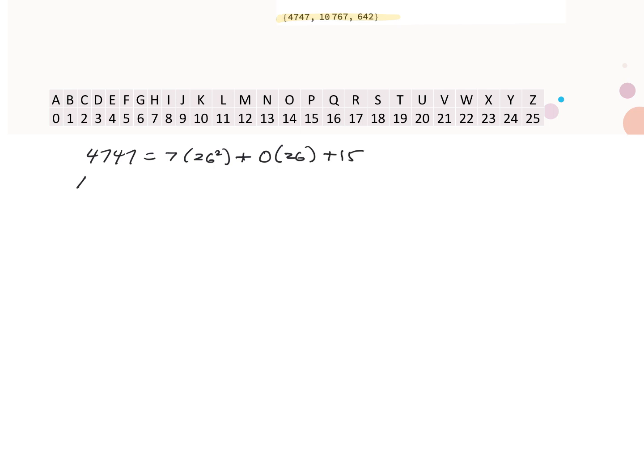Similarly, 10,767, we're going to divide by 26 squared, and we see that goes in 15 times. Calculate the remainder, and see how many times 26 goes into that, and it turns out 24 times with a remainder of three.